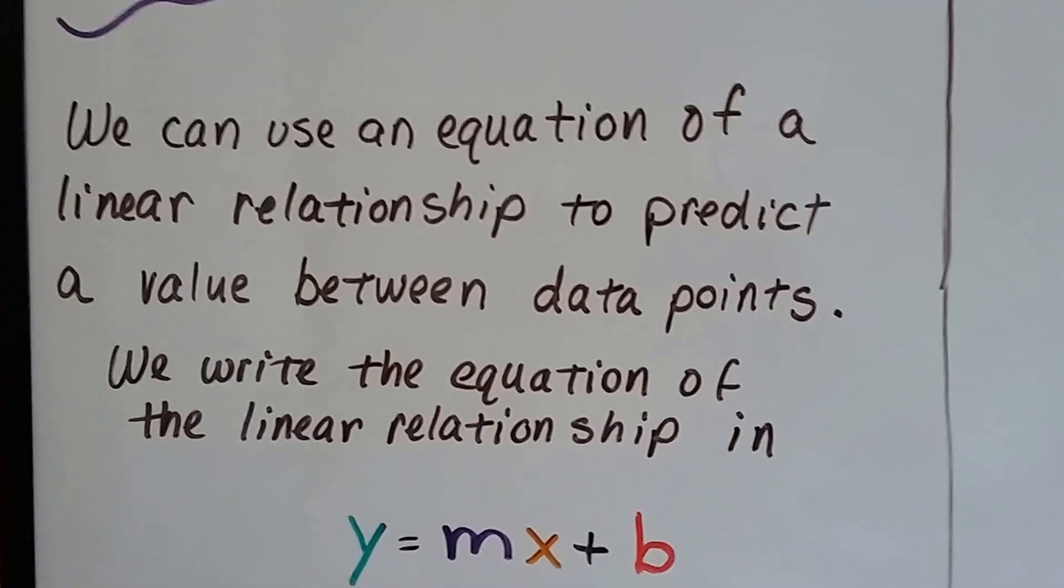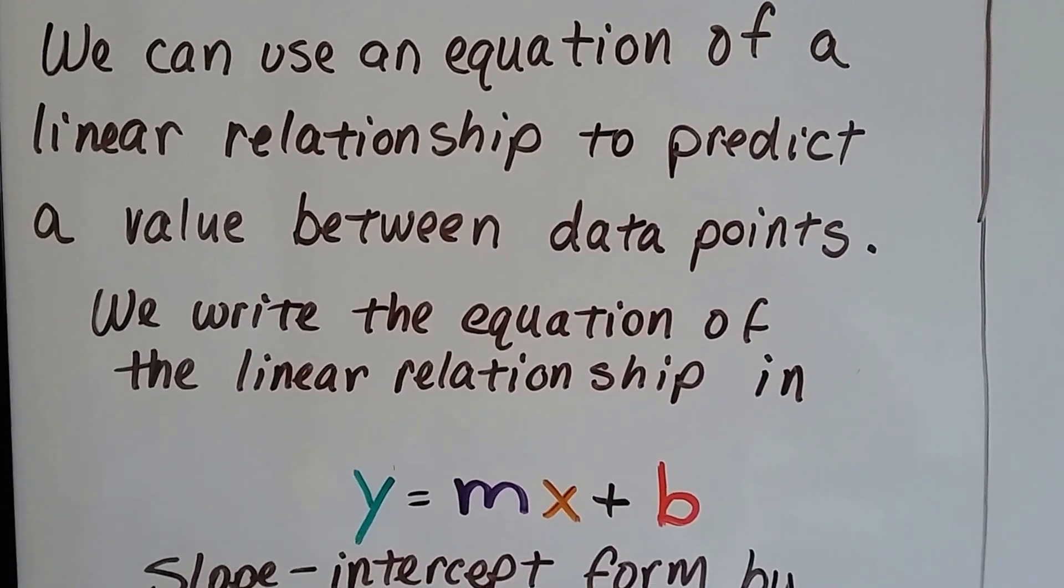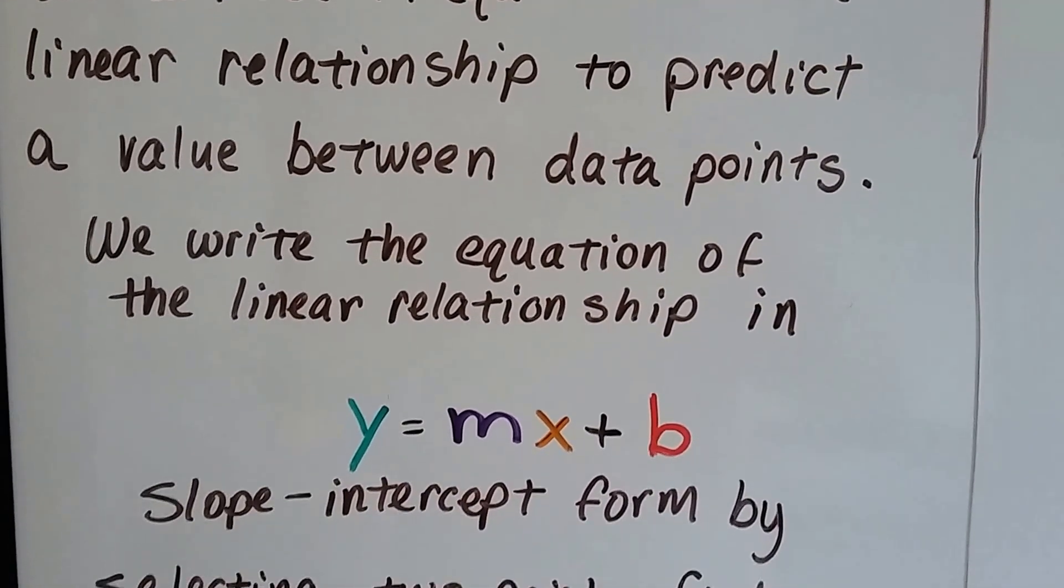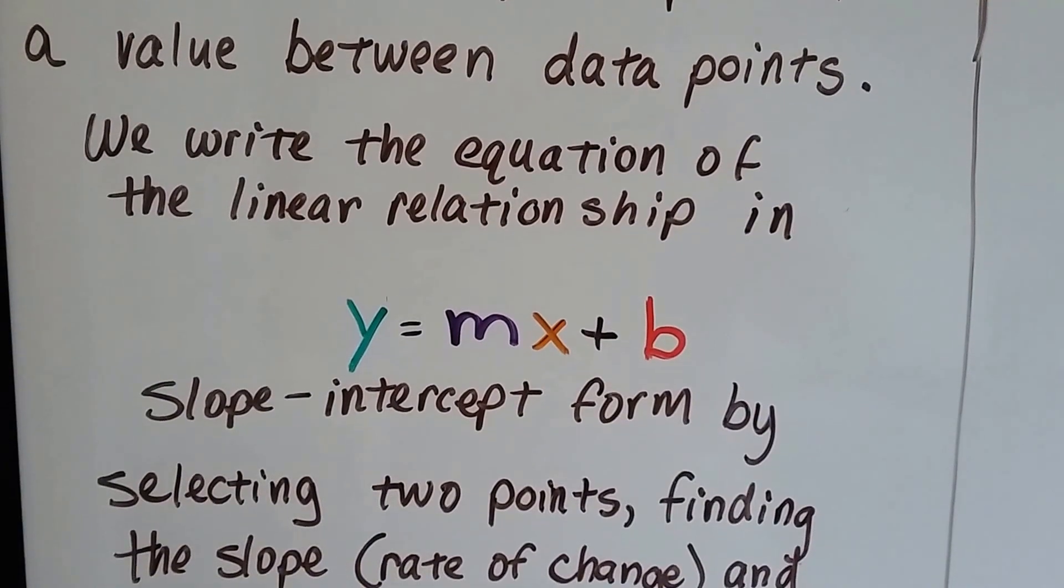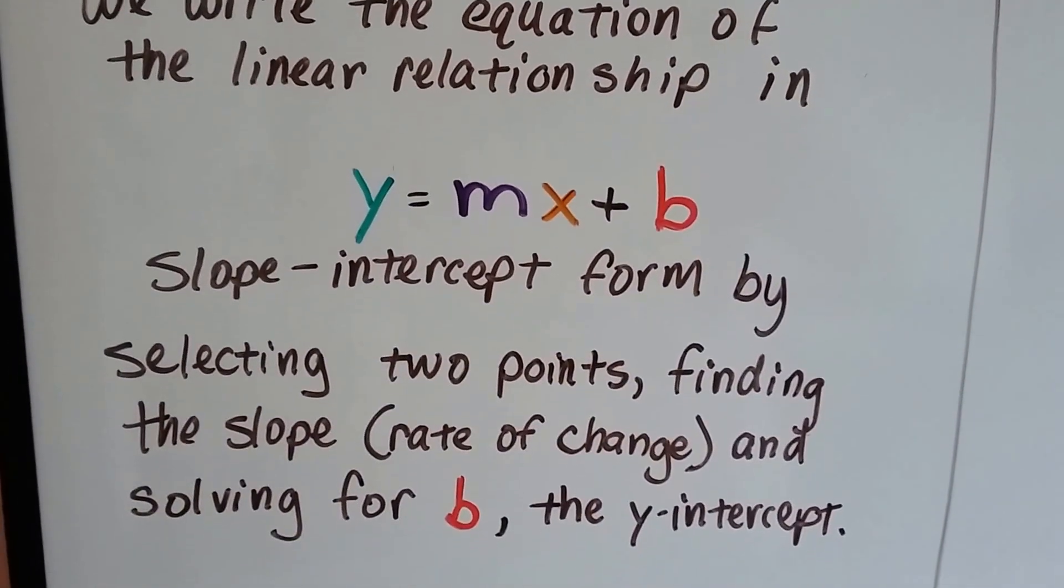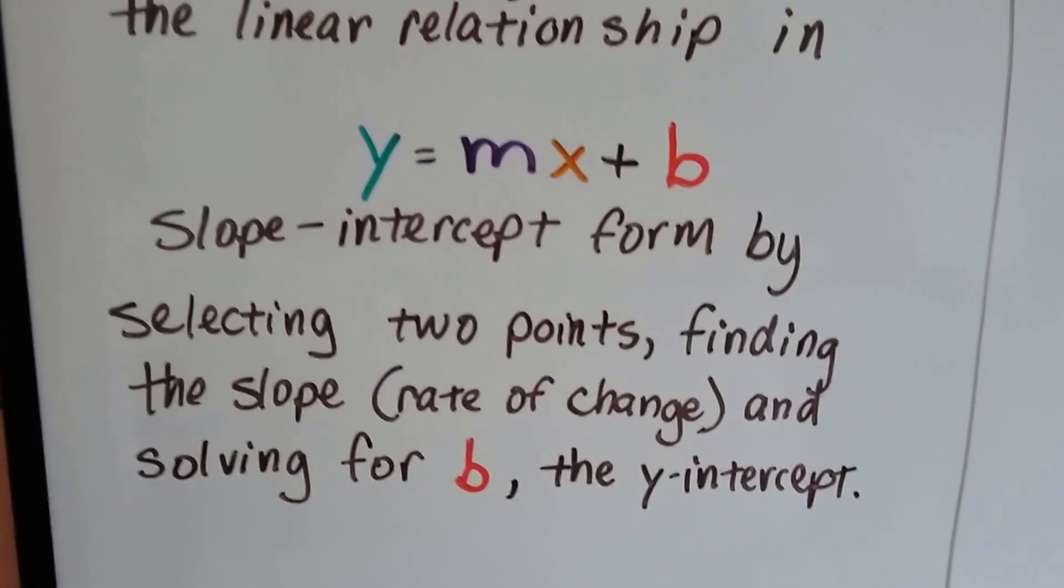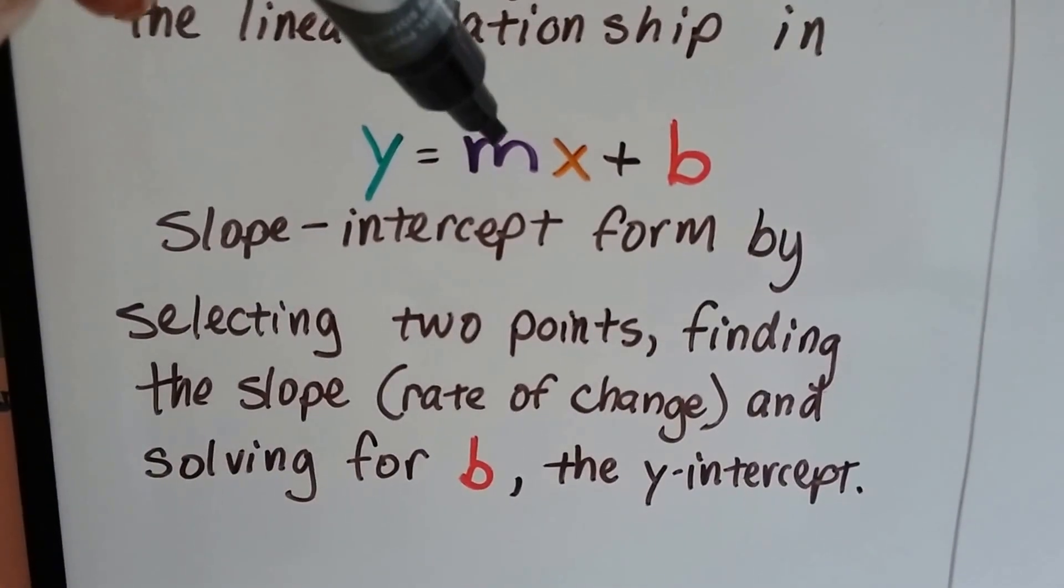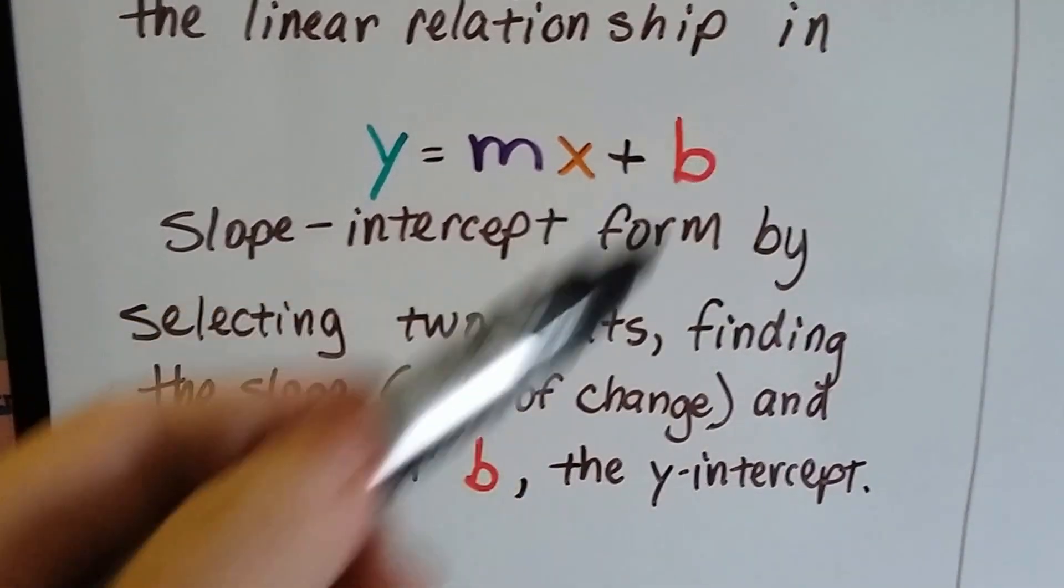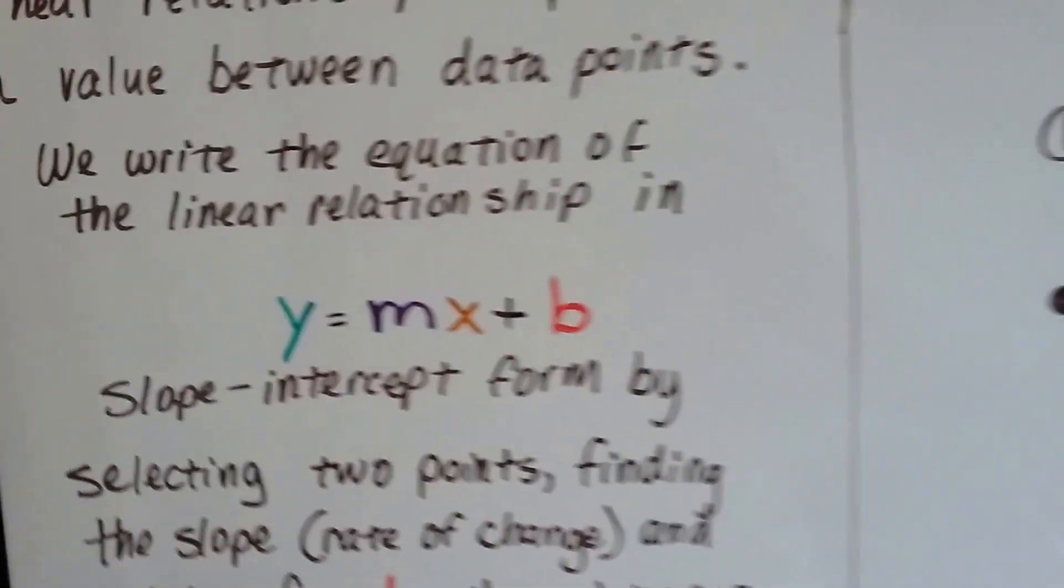We can use an equation of a linear relationship to predict a value between data points. We write the equation of the linear relationship in y equals mx plus b slope-intercept form by selecting two points and finding the slope, the rate of change, this m, and then we solve for b, the y-intercept. Then we'll be able to find our prediction.